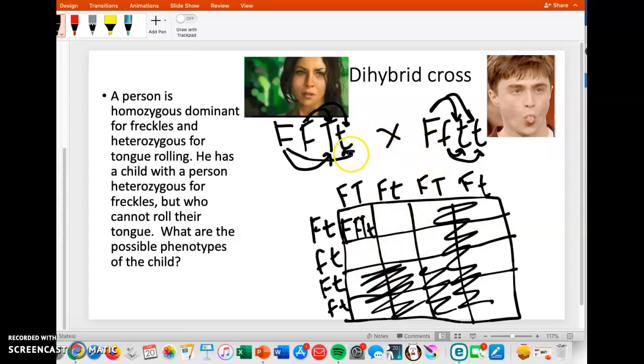When these individuals are heterozygous for both, big F little f big T little t, then it's going to fill the whole square here, and you're going to have many different combinations of offspring.